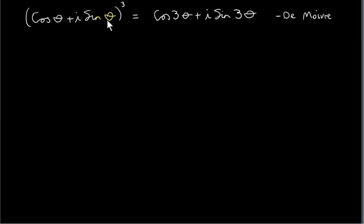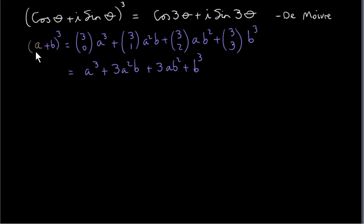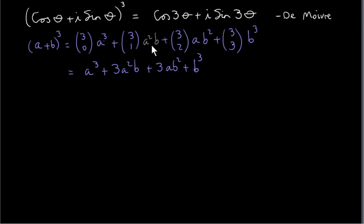I'm going to expand this out using the binomial theorem. Looking at the general case of a binomial raised to the power of 3: the first term is 3C0 times a³ times b⁰ — but b⁰ is 1. The next term is 3C1 times a² times b¹. The power of a decreases by 1 each time, and the power of b increases. It's useful to memorize this in words: the first term cubed, plus 3 times the first squared by the second, plus 3 times the first by the second squared, plus the second cubed.